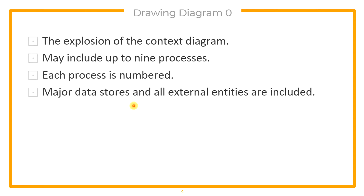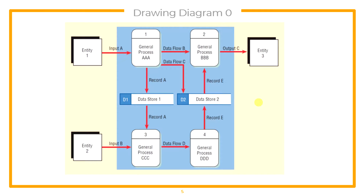Major data stores and all external entities are included in Diagram 0. Here is an example of Diagram 0. It includes entities, processes, and data stores. As much as possible, data flows should not overlap so that we can identify which process or data store that flow is going through, making it easier to understand.